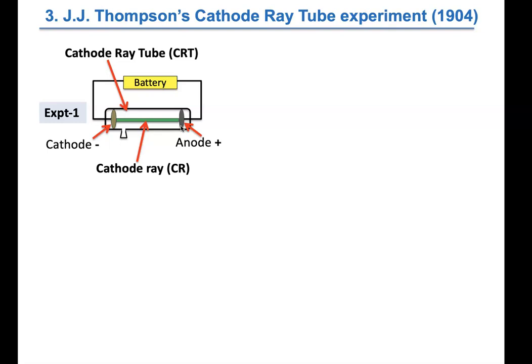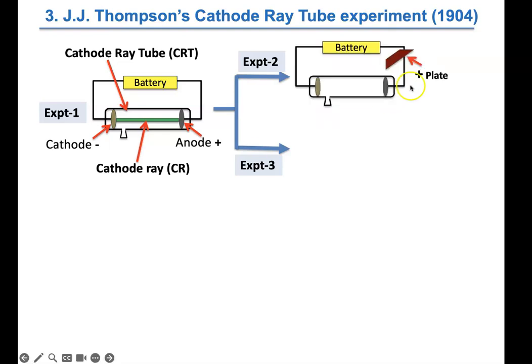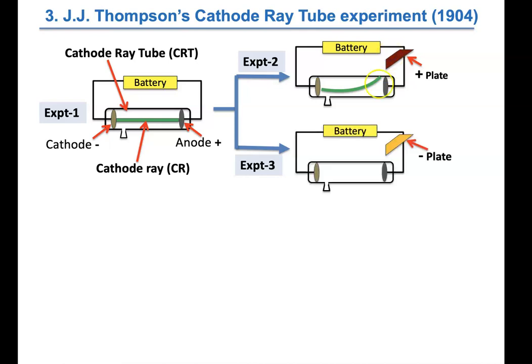To J.J. Thomson, the beam traveling from the minus side to the plus side indicated that these rays were made up of something negatively charged, since opposites attract. He then did two experiments: first, he placed a positively charged plate near the beam and found the cathode rays bent toward it, indicating attraction. Then, placing a negatively charged plate near the beam, the rays bent away from it, indicating repulsion.